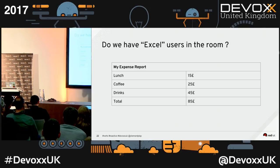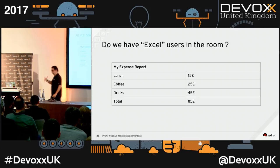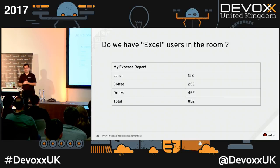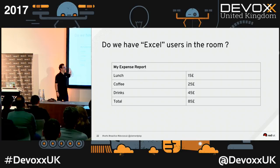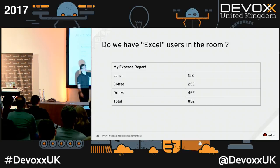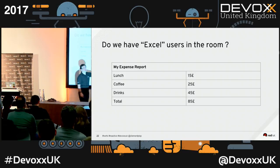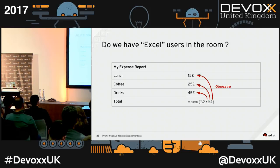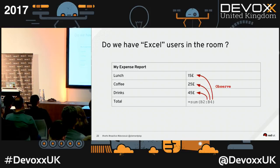I do a lot of travel, so the most painful experience is not the jet lag or the food on the plane — it's really my expense report. When I do my expense report I use Excel, and I say: lunch 15 pounds, coffee 25 pounds, drinks 45 pounds. And I have this sum cell that observes the other cells — in Excel you'd just write a sum formula. So there is this idea of observation. Over time, the values in my cells change — I have a stream, a sequence of data over time.